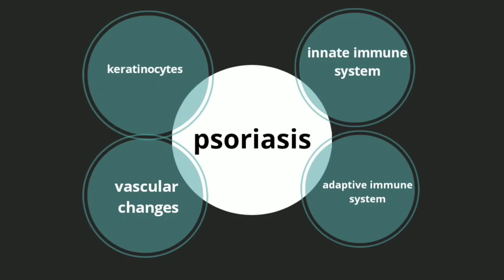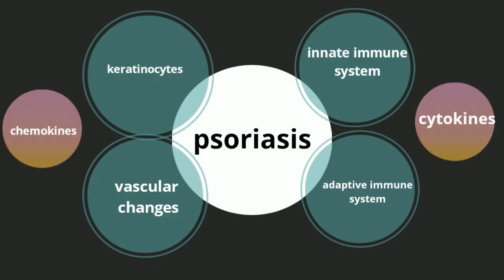The four major components are: dysregulation of the innate immune system, dysregulation of the adaptive immune system, dysregulation of keratinocytes — keratinocytes basically form a part of the innate immune system, but I have written them separately here just to add another point about keratinocytes — and finally, there are some vascular changes as well.